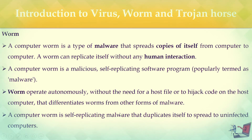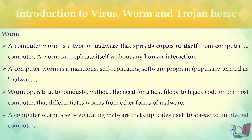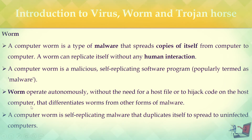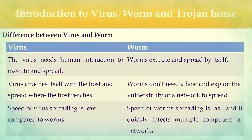Virus and worm may seem similar, but what is the difference? A virus needs human interaction to execute and spread, while a worm executes and spreads by itself. A computer worm is a self-replicating malware that duplicates itself to spread to uninfected computers. Its target is to attack all your computer programs and spread to other computers on the network.